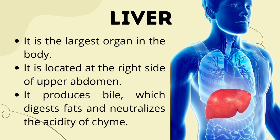Next is the liver — it is the largest internal organ in the body, located on the right side of the upper abdomen. It produces bile, which digests fats and neutralizes the acidity of chyme. The chyme formed in our stomach has high acidity due to stomach acid, and the bile produced by the liver neutralizes that acidity. That is the function of bile produced by our liver.